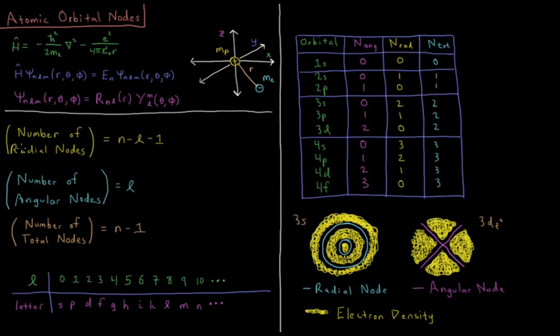There are two kinds of nodes that we're interested in: radial nodes, where there's a certain value of radius away from the proton where you have zero electron density, and angular nodes, where there's a certain value of theta and/or phi where at that particular angle you have zero electron density.